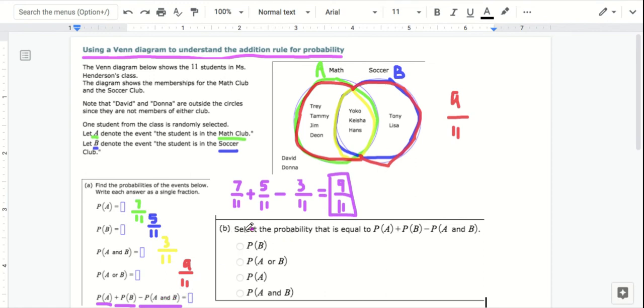So in this question B, select the probability that is equal to P of A plus P of B minus P of A and B. Well that's the same as P of A or B.